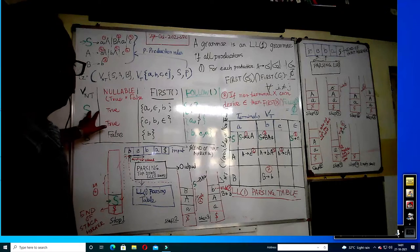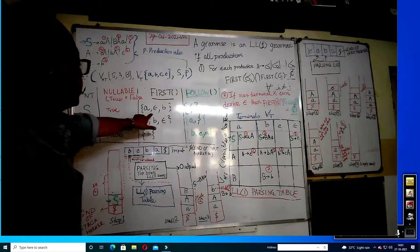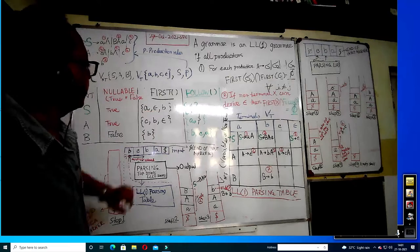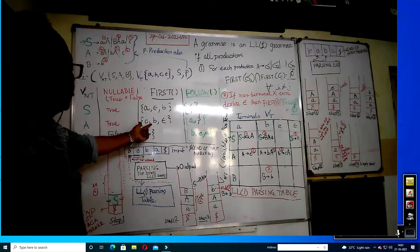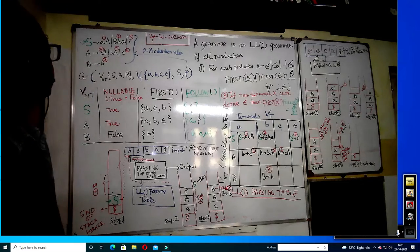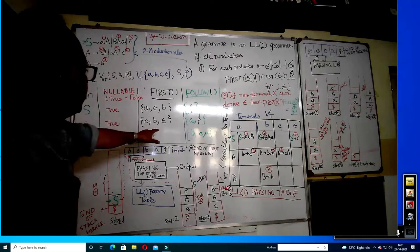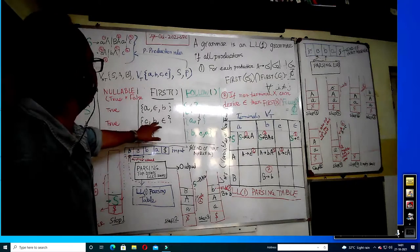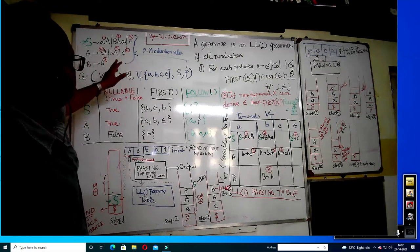So only dollar comes in FOLLOW of S. A is nullable: from rule 1, A goes to small a, and from rule 3 it goes to epsilon. From rule 2, A goes to capital B, and capital B goes to small b. Now capital A is nullable, so by rule number 4 FIRST of capital A includes C, by rule 5 it includes B, and because A can go to epsilon by rule 2, A is also in FIRST of A. So FIRST of A is {A, C, B, epsilon}.